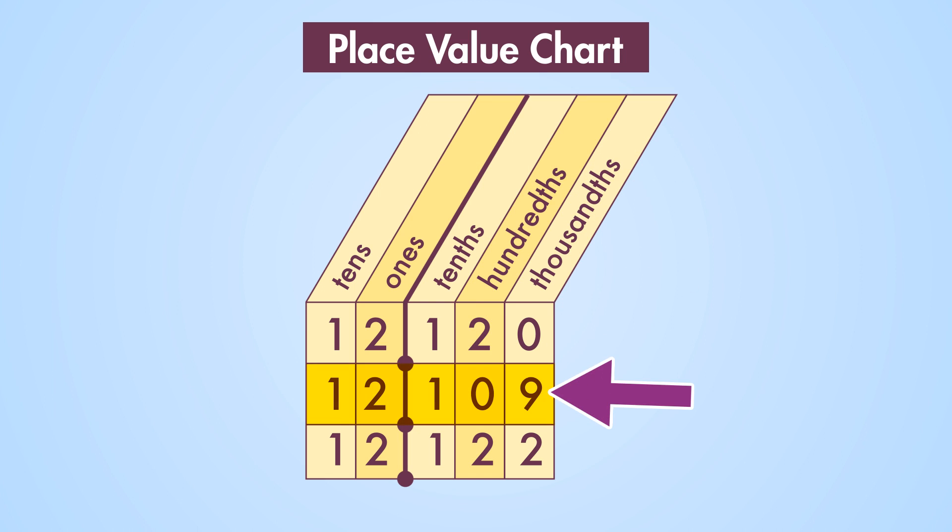So the smallest number in this set is twelve and one hundred nine thousandths.